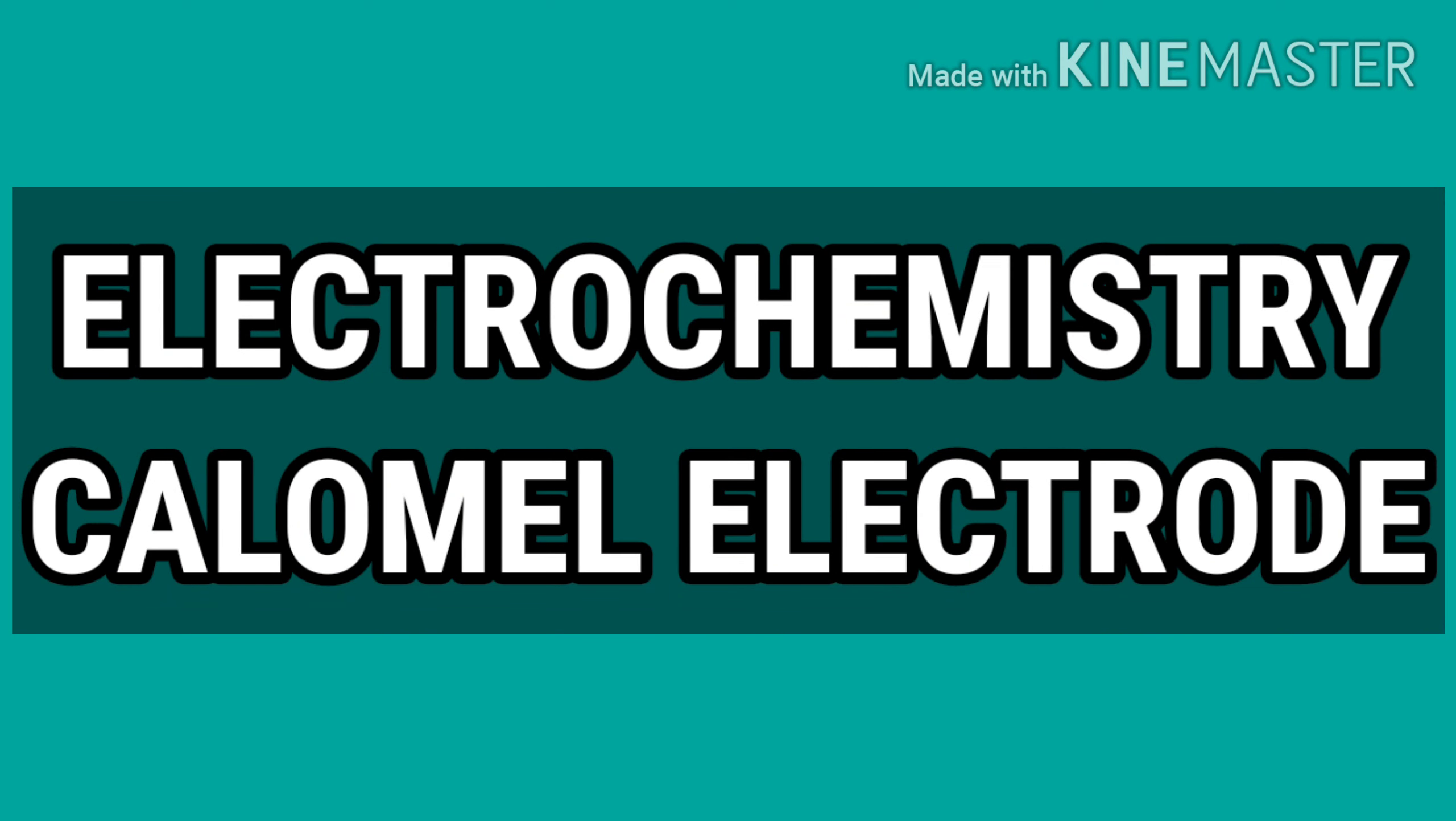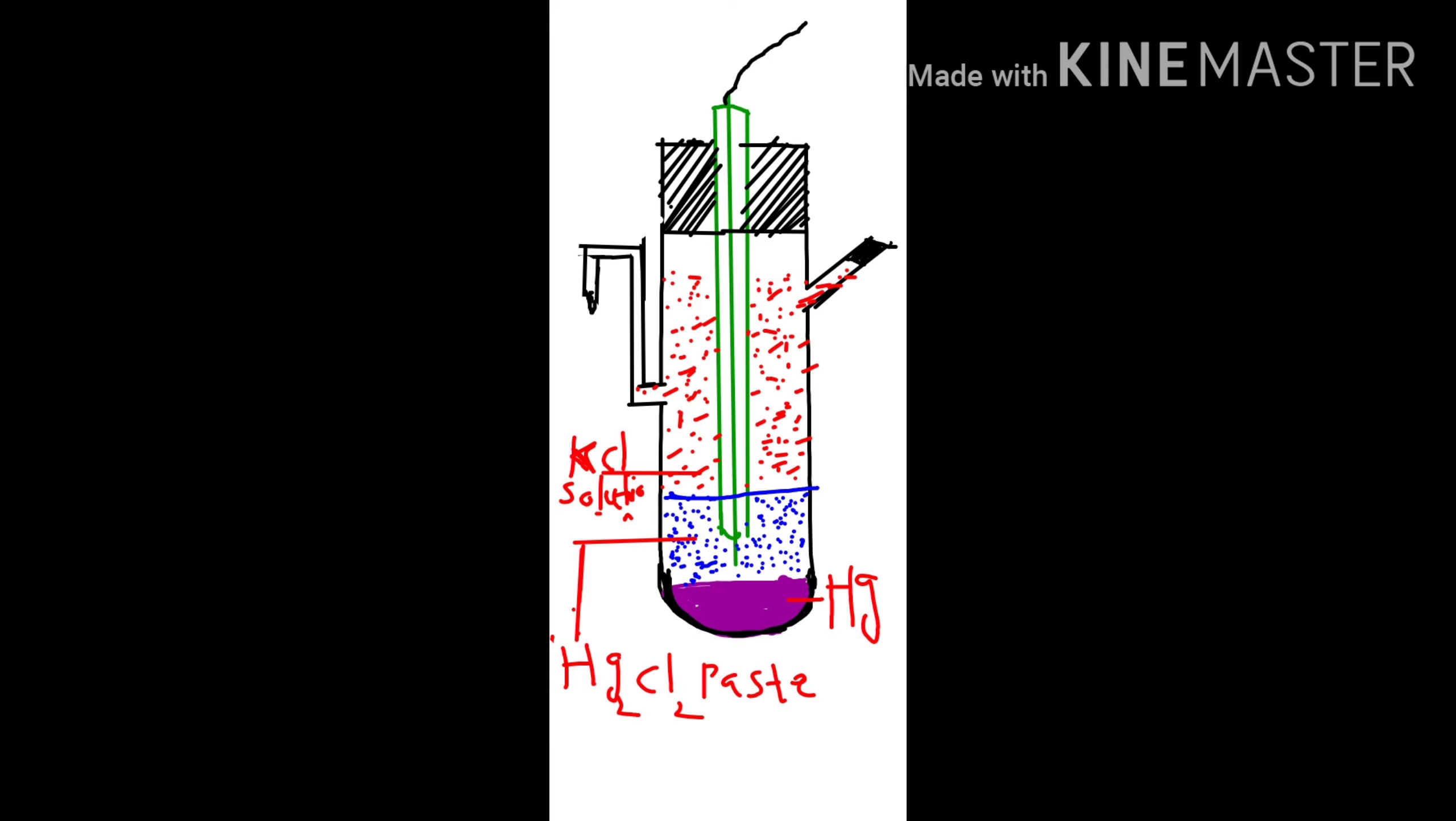Calomel electrode is a secondary reference electrode made up of glass. This glass tube contains two side tubes, one on the right side and the other on the left side.